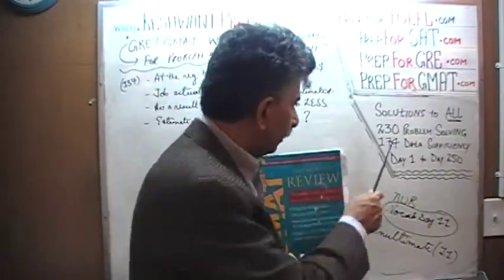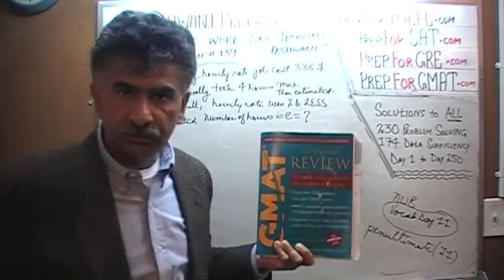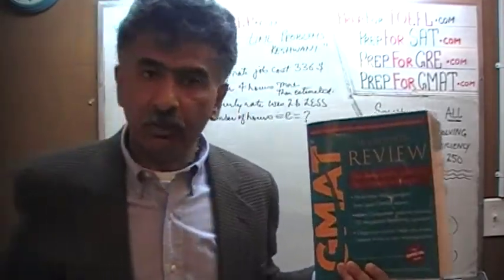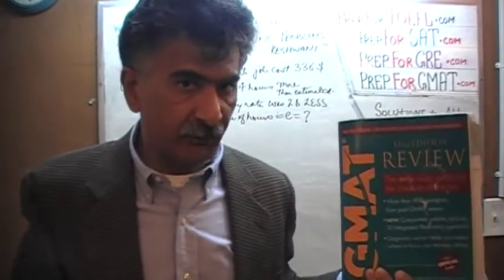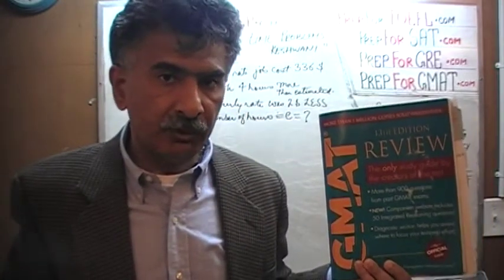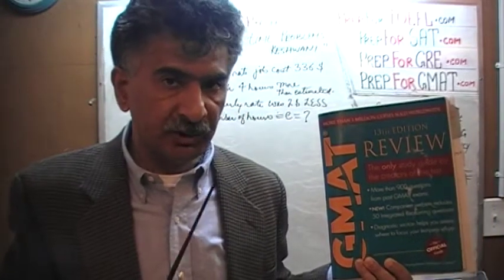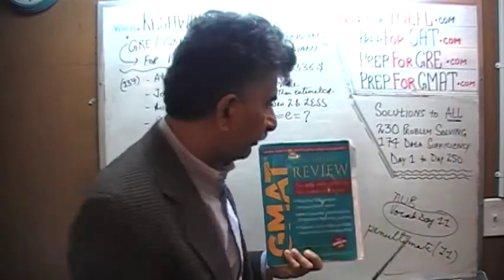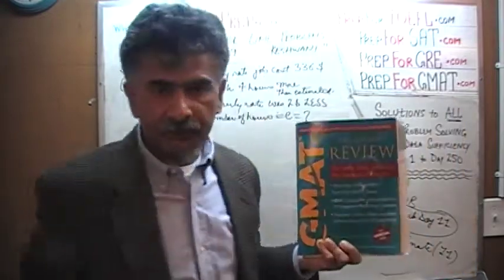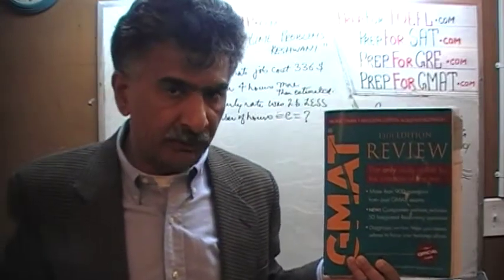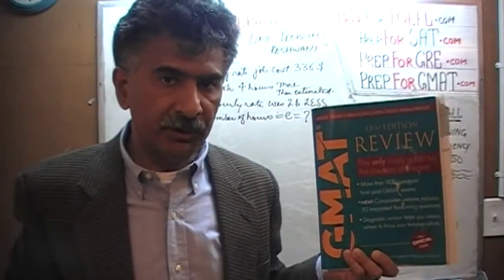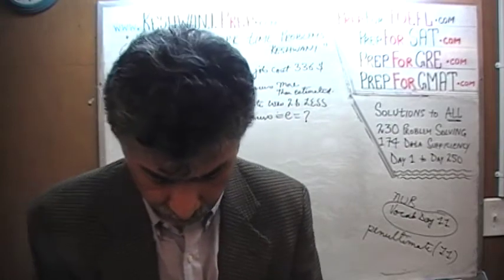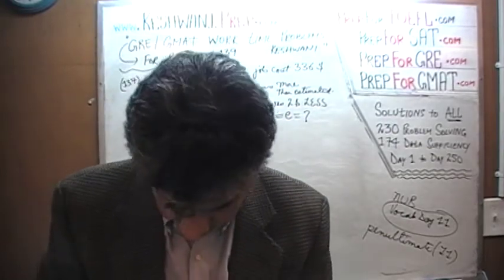The book contains 230 problem solving questions. It has 174 data sufficiency questions. We have already solved every single one of those problems. If you are interested in watching the original solutions to these problems, you will find the original solutions from day number 1 through 250. Right now we are in the process of redoing the problems and we are on page number 100, I believe, and 171.